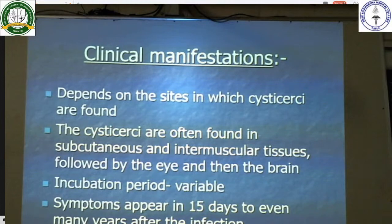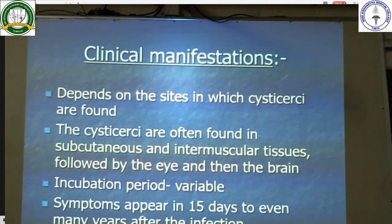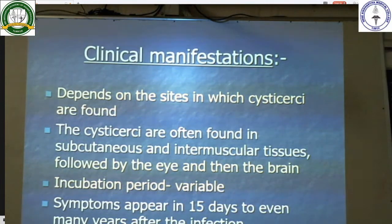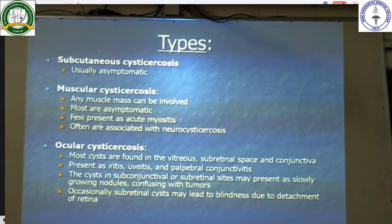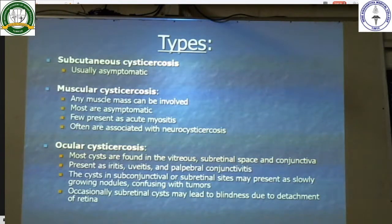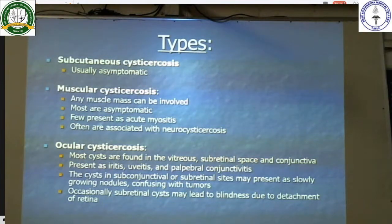Clinical manifestations of cysticercosis depend on the site in which the cysticerci are found — subcutaneous intramuscular tissue, followed by the eye and the brain. The incubation period is variable; symptoms appear 15 days to many years after initial infection. Subcutaneous cysticercosis is usually asymptomatic. Muscular cysticercosis can be asymptomatic, present as a muscle mass, or as acute myositis, and is usually associated with neurocysticercosis.